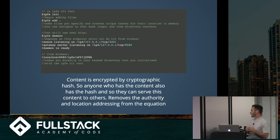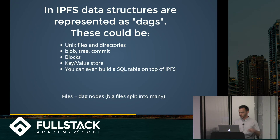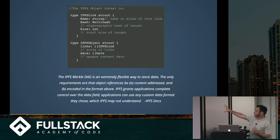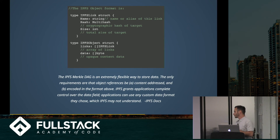It's secured by cryptographic hash, so anyone who has the content also has the hash and can serve it to others — removing the authority and location addressing from the equation. IPFS data structures are represented as DAGs, which can be Unix files, directories, blob trees, commits, etc. You can even build a SQL table on top of IPFS. Files are DAG nodes, with big files split into many. The only requirement is that object references be content-addressed and encoded in the specified format, granting applications complete control over the data field to use a custom format.